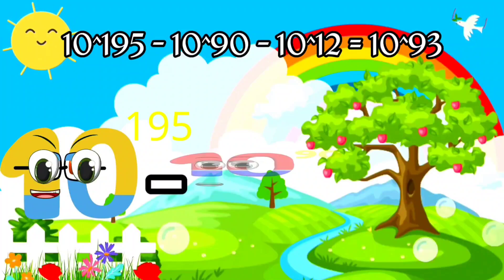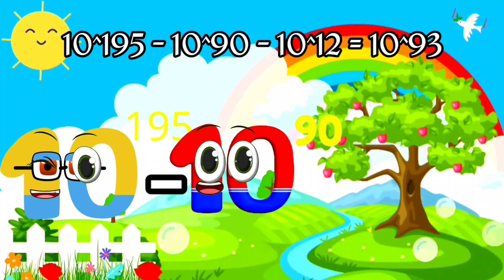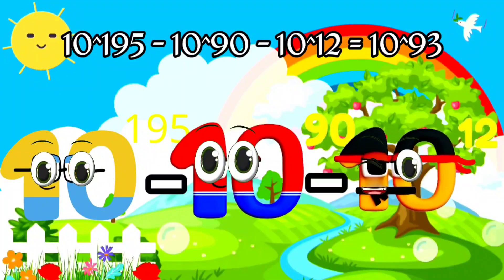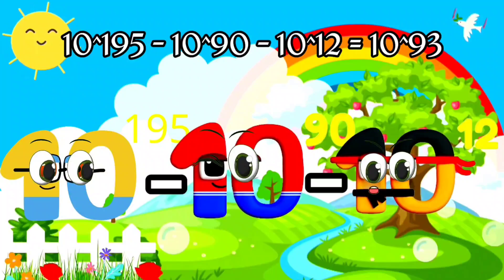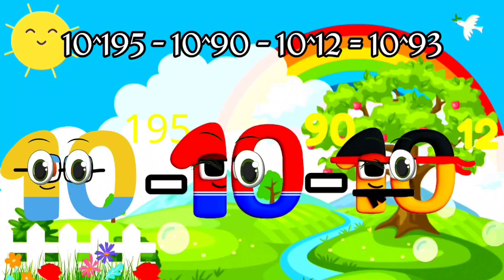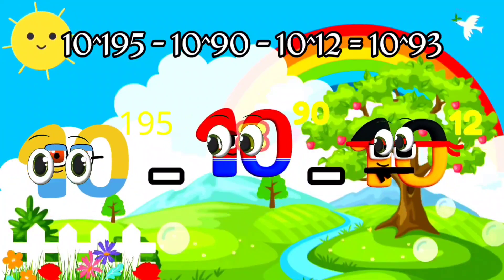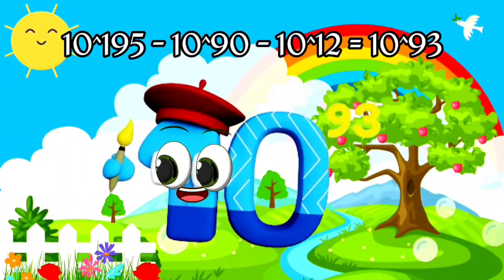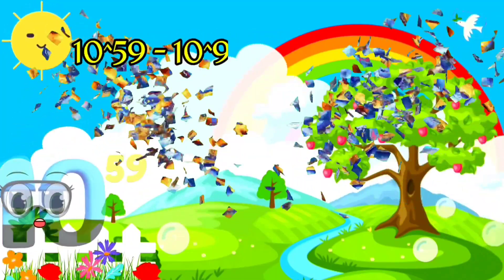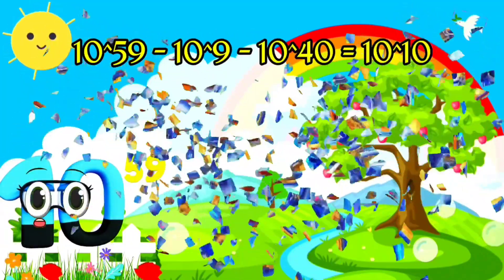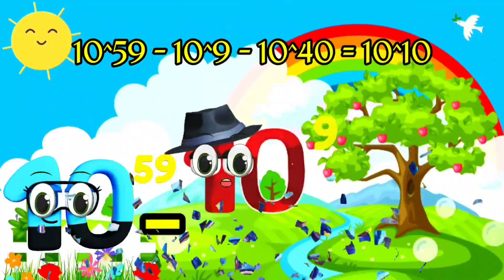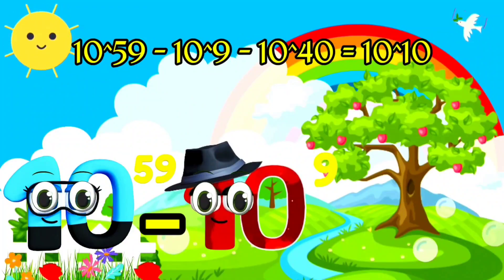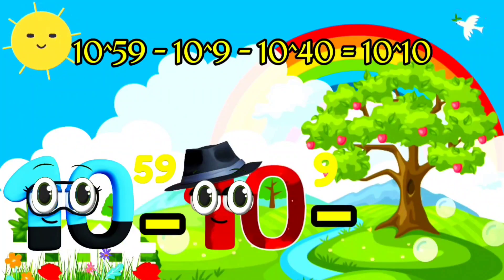I'm Lungus. I'm Novemvigintillion, and I've got 90 zeros. I'm 1 Trillion, and I'm made up of 12 zeros. Equals. I'm Trigintillion, and I have 93 zeros. 100 Octavigintillion. Minus. I'm 1 Billion, and I'm 1 and 9 zeros. Minus.